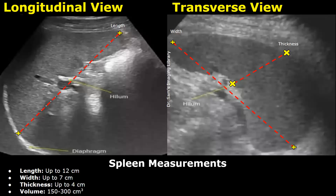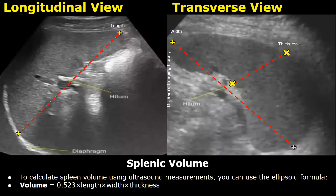The normal range of the splenic volume can be between 150 to 300 cubic centimeters. To find the splenic volume, you can use this formula: the volume will be equal to 0.5 multiplied by the product of length, width, and thickness.